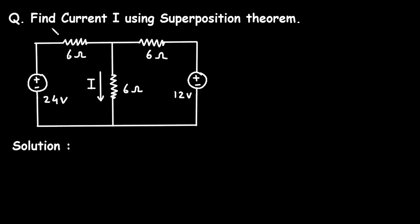Question: find current I using superposition theorem. Here in this circuit, we have to find this current I by using superposition theorem.